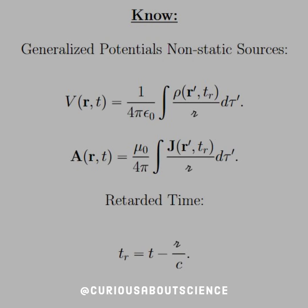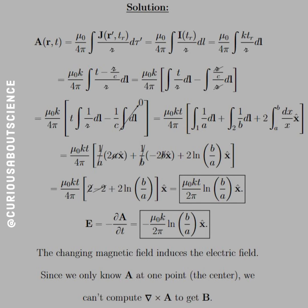We have the generalized potentials for the non-static sources — these are the retarded potentials evaluated at the retarded time. In order to evaluate the vector potential A(R, t), we have to be very careful with respect to what the current density j is, and we're going to have to split things up carefully. Once we plug in I evaluated at the retarded time — we were told I = kt, a linear function — what this becomes is k·t_r / script_r · dl. We transfer the vector component from I to the dl component.